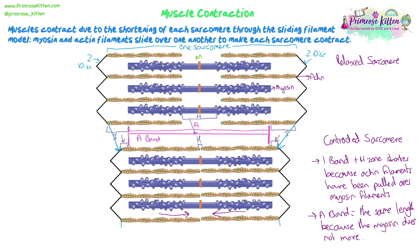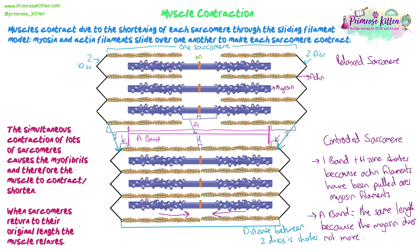The Z discs have got closer together as the whole sarcomere has shortened. So we know a sarcomere is contracted because the I bands are shorter, the H zone is shorter, the Z discs are closer together, and overall the sarcomere has become shorter — but the A band does not change. Exam questions may ask you to identify these structures in a contracted sarcomere, explain why the A band doesn't change, or explain how you know an image shows a contracted sarcomere.